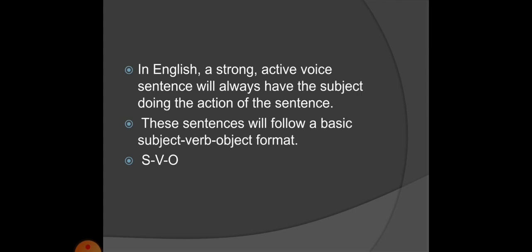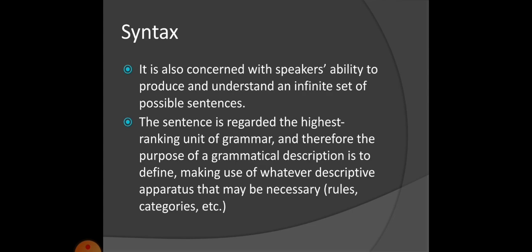In English, a basic sentence like 'I go to school': 'I' is subject, 'go' is verb, 'school' is object. Similarly, 'He opened the door': 'he' is subject, 'opened' is verb, 'the door' is object. 'I ate an apple': 'I' is subject, 'ate' is verb, 'an apple' is object. The basic pattern is subject, verb, and object. But in Urdu the syntactic pattern is different.